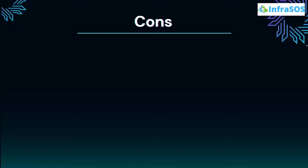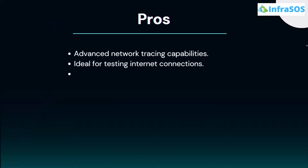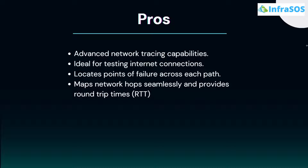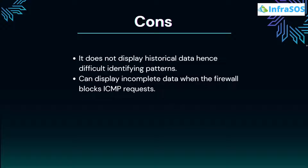At number 11 we have Traceroute. Traceroute is a penetration testing tool designed using the ICMP protocol. It allows system admins to map how packets travel between the source and destination, sending packets to a target machine and listing all devices it passes through. Pros include advanced network tracing capabilities, ideal for testing internet connections, locating points of failure, and mapping network hops with round-trip time (RTT). Cons include that it does not display historical data, making it difficult to identify patterns, and it can display incomplete data when a firewall blocks the ICMP request.